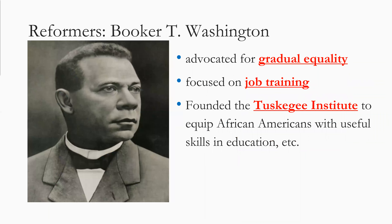We also have Booker T. Washington, who pushed for gradual equality — slowly gaining it by focusing on getting job training, better jobs, and making more money. He helped establish the Tuskegee Institute, one of the first all-African American colleges in the country, which is still a very important school today. The Tuskegee Airmen of World War II came from there and were one of the greatest American fighter pilot groups of the war. His idea was: get your education, get a job, start making money, and equality will follow afterward.